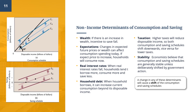Wealth is the amount of all assets that households own minus their total debts, built by saving out of current income. If there is an increase in wealth, the incentive to save will fall — the consumption schedule shifts up and saving schedule shifts down. The opposite occurs when wealth falls. Regarding expectations, if households expect future prices to increase, the consumption schedule will rise and saving schedule will fall today.